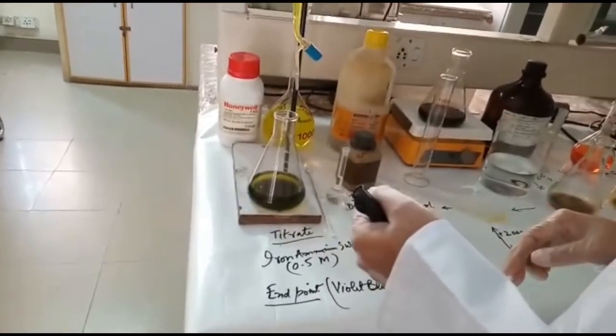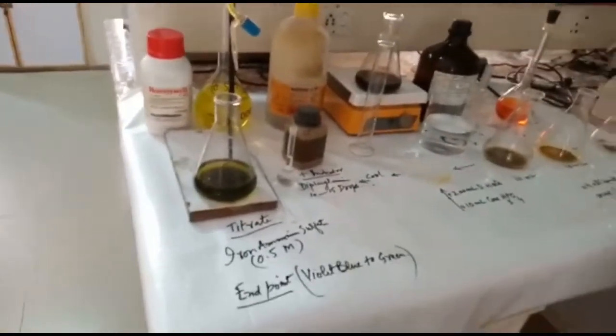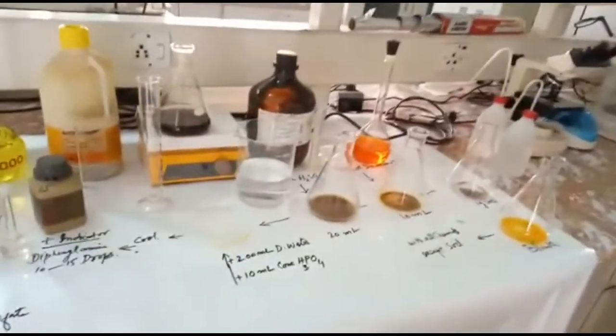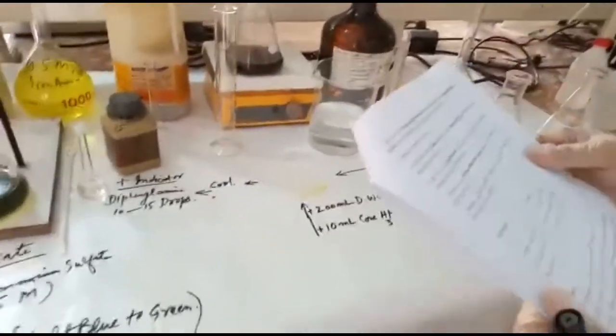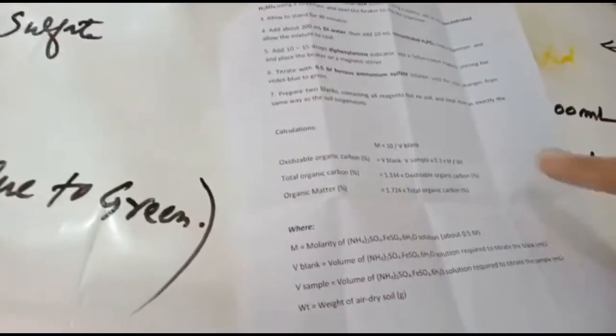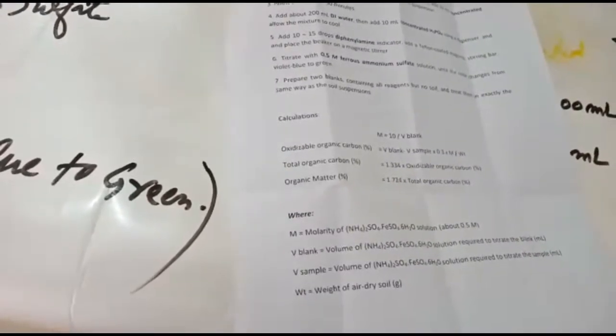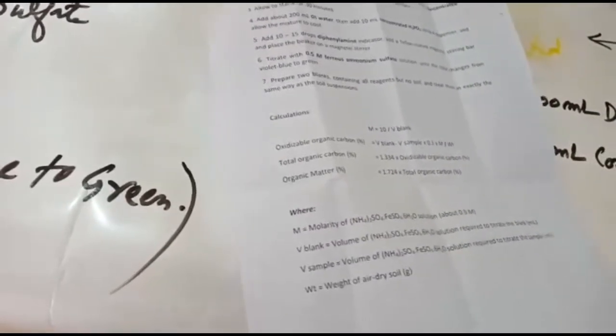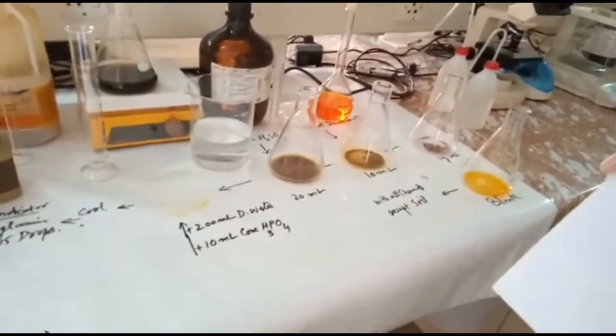After this, we will use certain calculations to determine the organic matter in the soil. Here are the calculations—you already have this one. By multiplying with these values and with the factors, we finally get the organic matter percentage in our soil. This is all about organic matter determination.